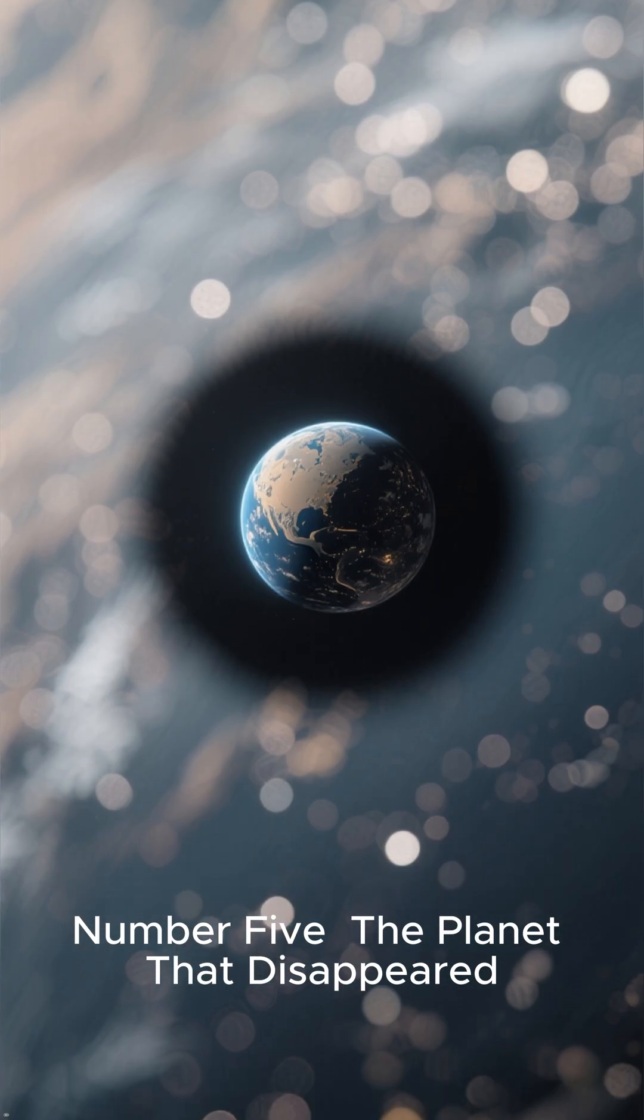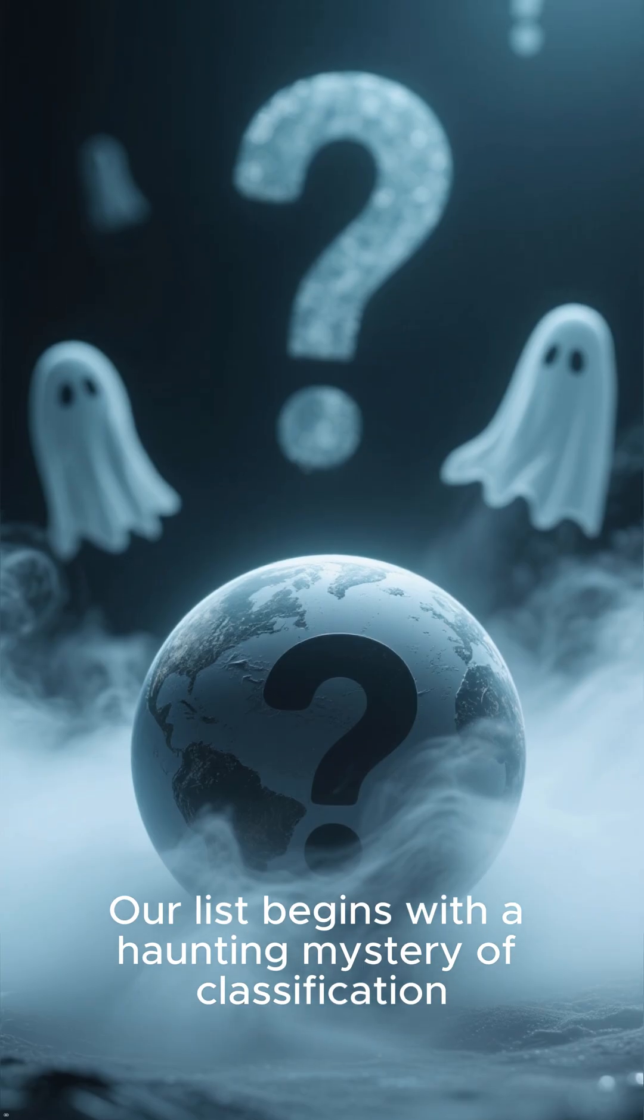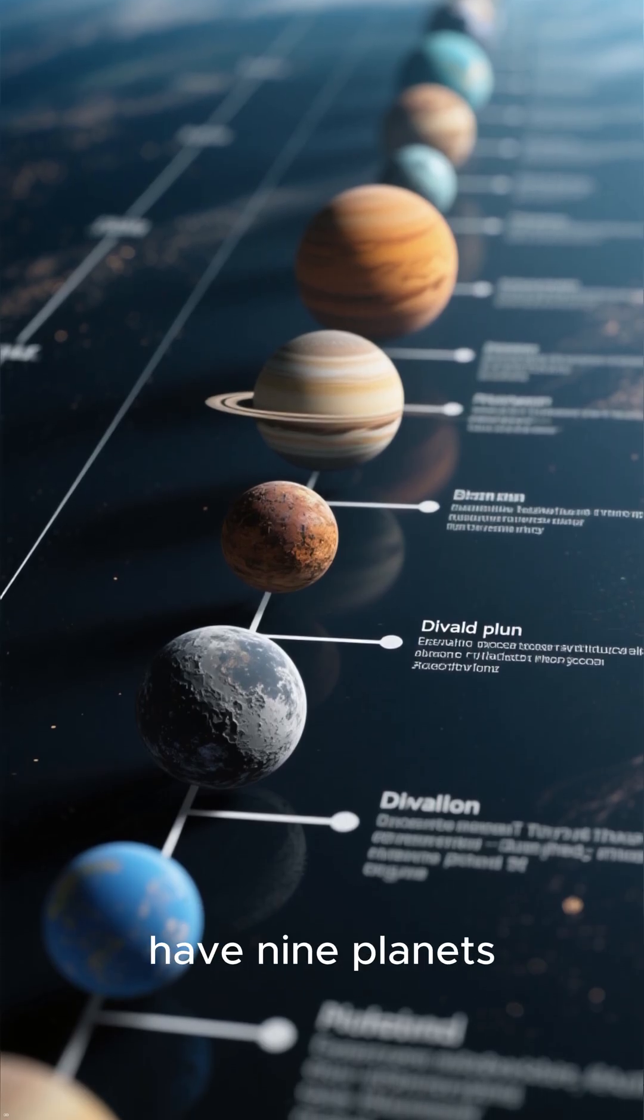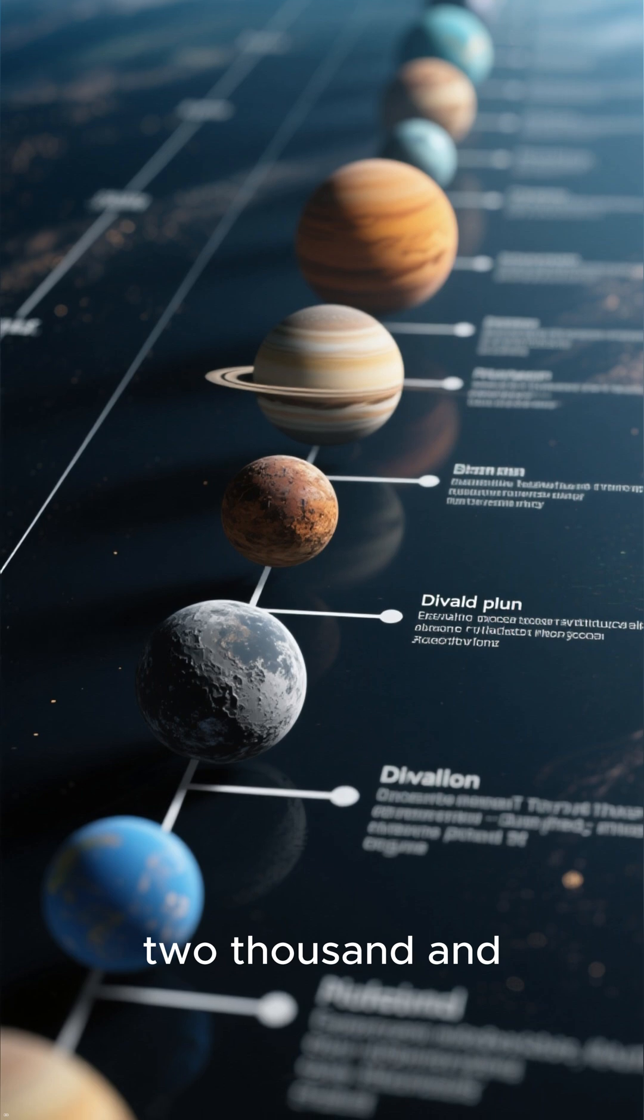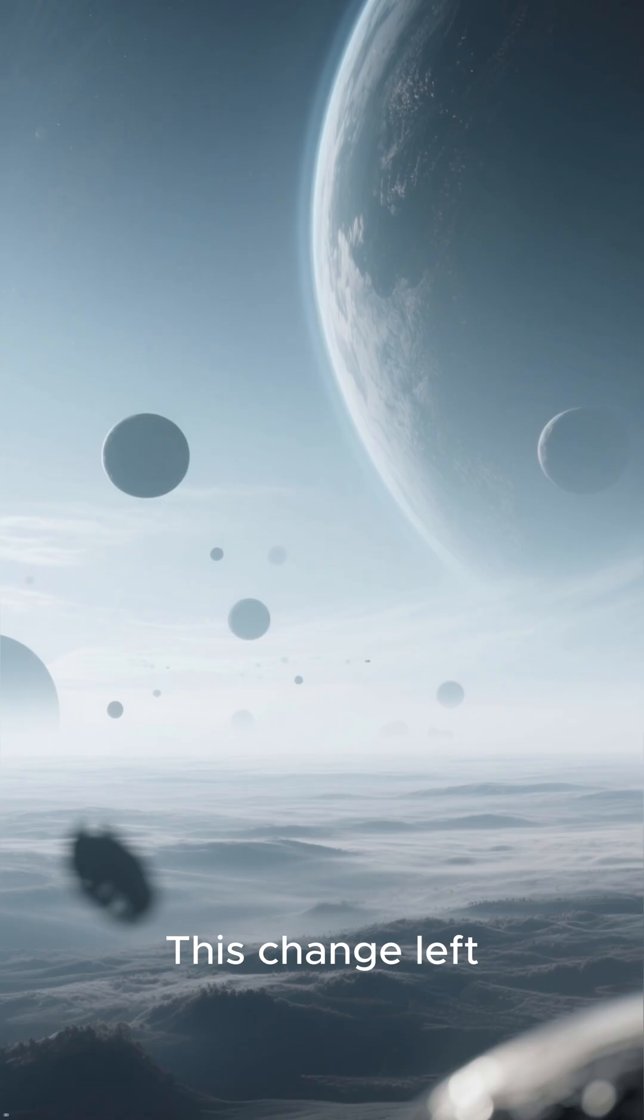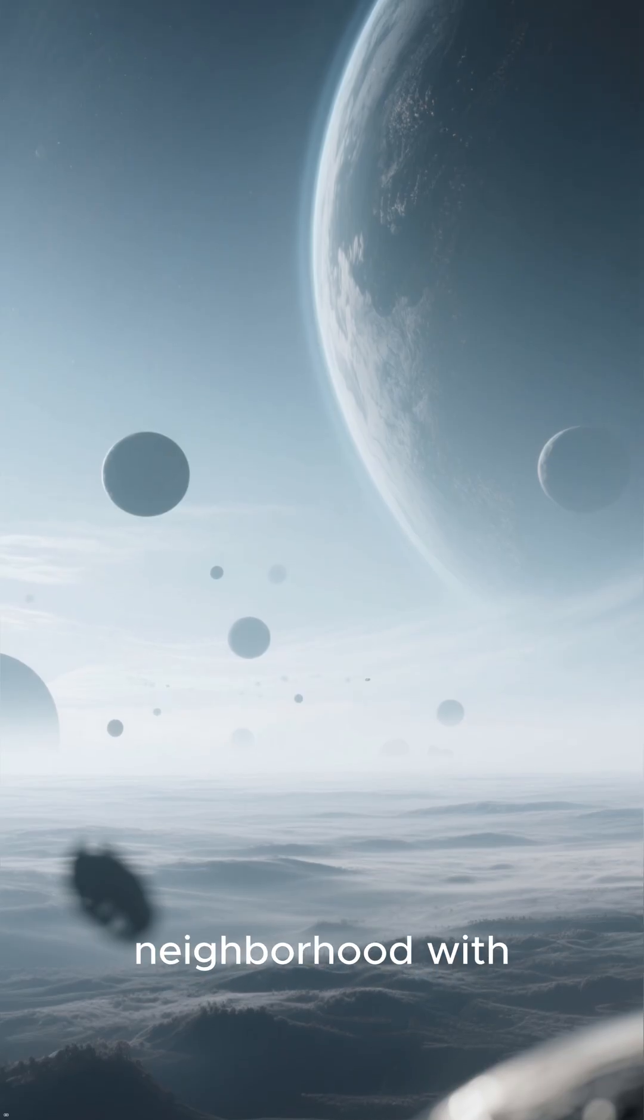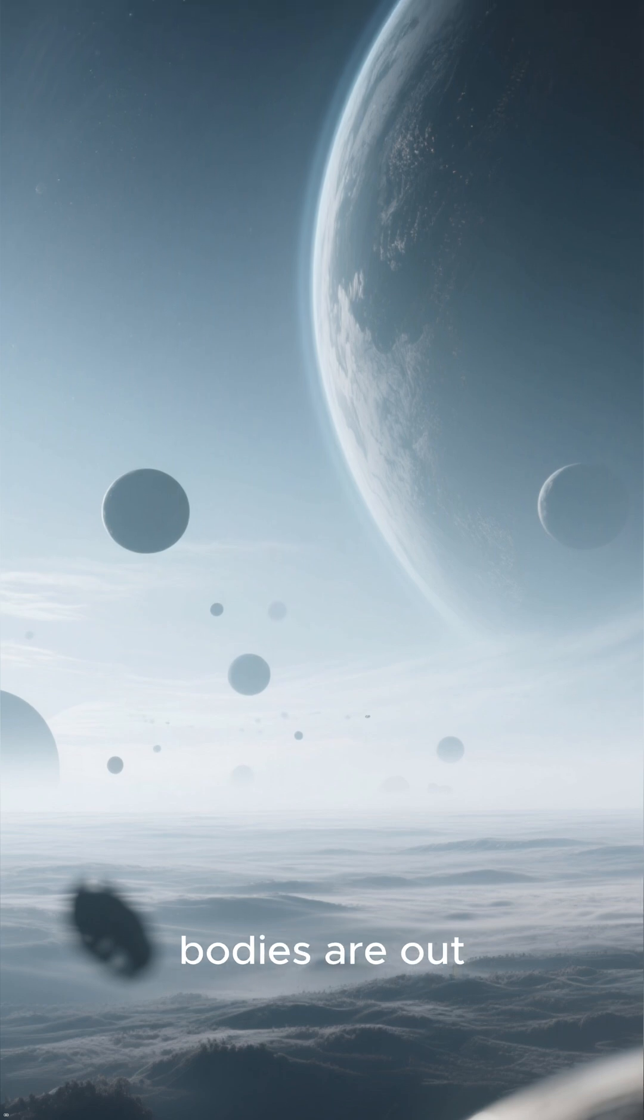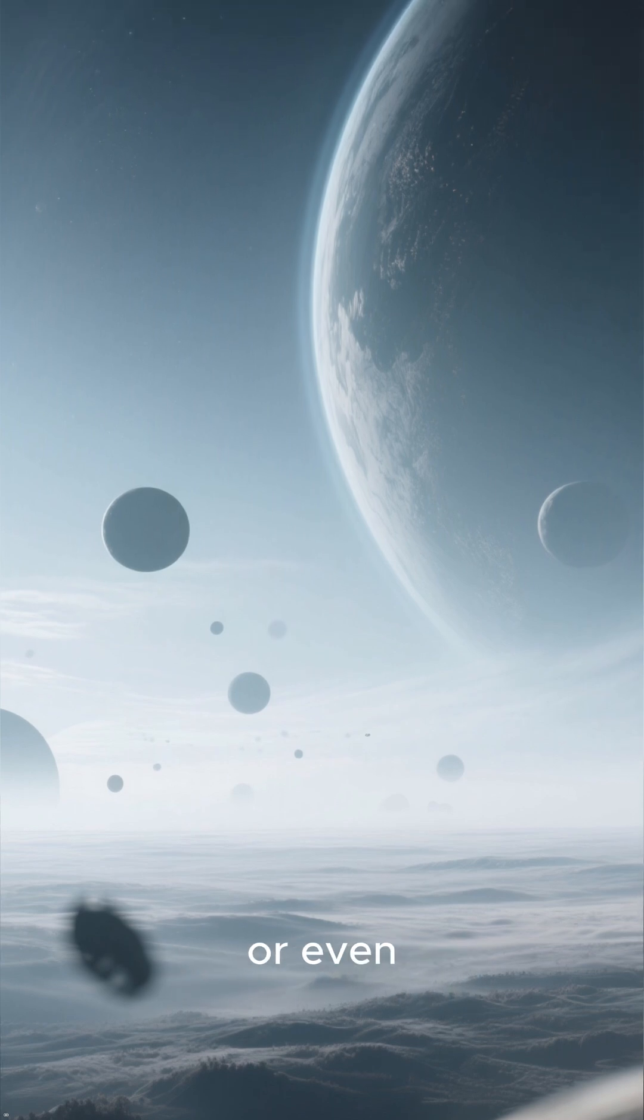Number 5: The Planet That Disappeared. Our list begins with a haunting mystery of classification. For more than 7 decades, our solar system was thought to have 9 planets. But in the year 2006, one was demoted. This change left our celestial neighborhood with a chilling empty void and a question. What other celestial bodies are out there, waiting to be reclassified or even discovered?